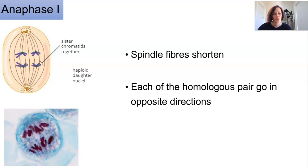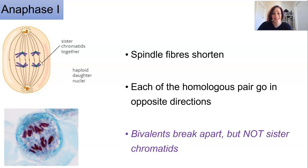Now it's really important to note that the bivalent splits not the sister chromatids. This is not like mitosis in this situation. The sister chromatids are still intact but there's just one of each pair now moving to the other poles.